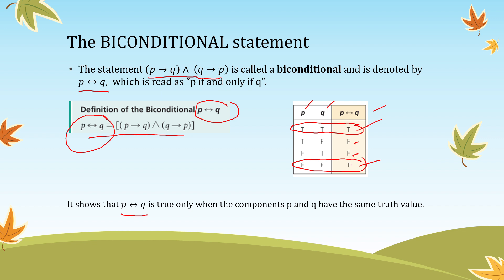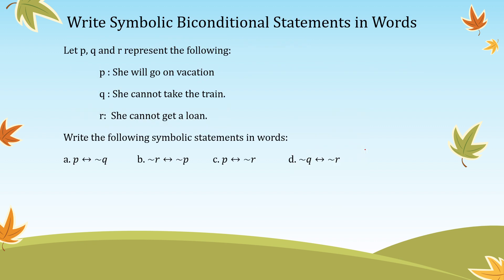Let us have an example. Write a symbolic biconditional statement in words. Let P, Q, and R represent the following: P is 'she will go on vacation,' Q is 'she cannot take the train,' and R is 'she cannot get a loan.' Write the following symbolic statements in words.